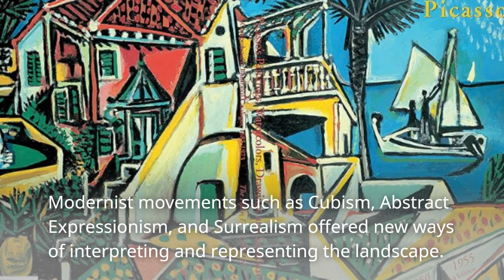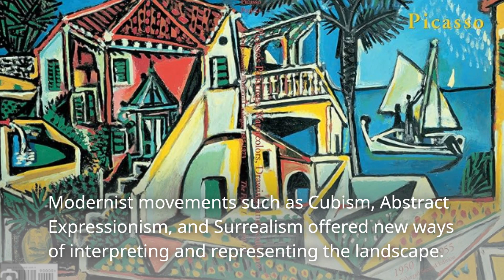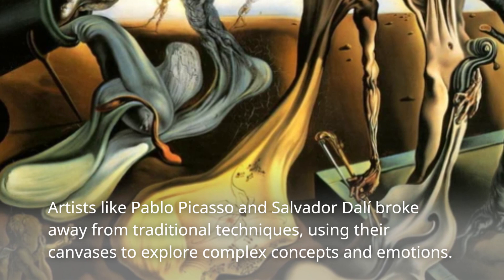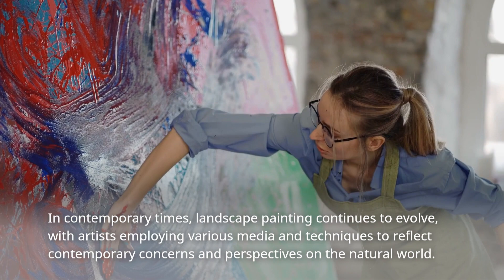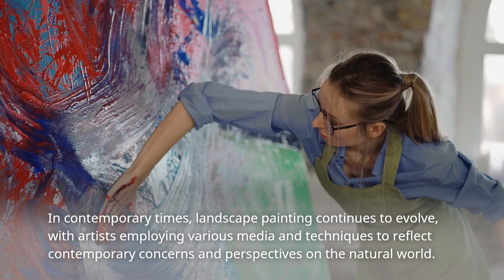Modernist movements such as Cubism, Abstract Expressionism, and Surrealism offered new ways of interpreting and representing the landscape. Artists like Pablo Picasso and Salvador Dali broke away from traditional techniques, using their canvases to explore complex concepts and emotions. In contemporary times, landscape painting continues to evolve, with artists employing various media and techniques to reflect contemporary concerns and perspectives on the natural world.